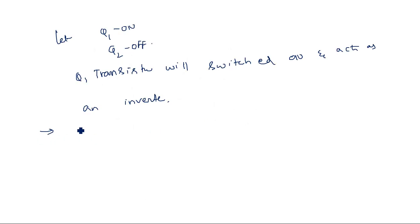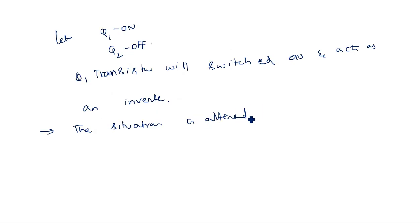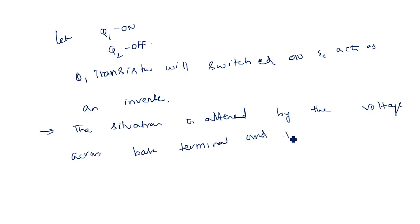Until a sufficient cut-in voltage is available, the transistor will remain in off state. The situation is then altered: Q1 is in on state and Q2 is in off state, then Q2 is switched on and Q1 is switched off. The situations of the transistors are altered based on the voltage across the base and emitter terminals. This is the bidirectional transmission — it may be implemented using one transistor or two transistors.